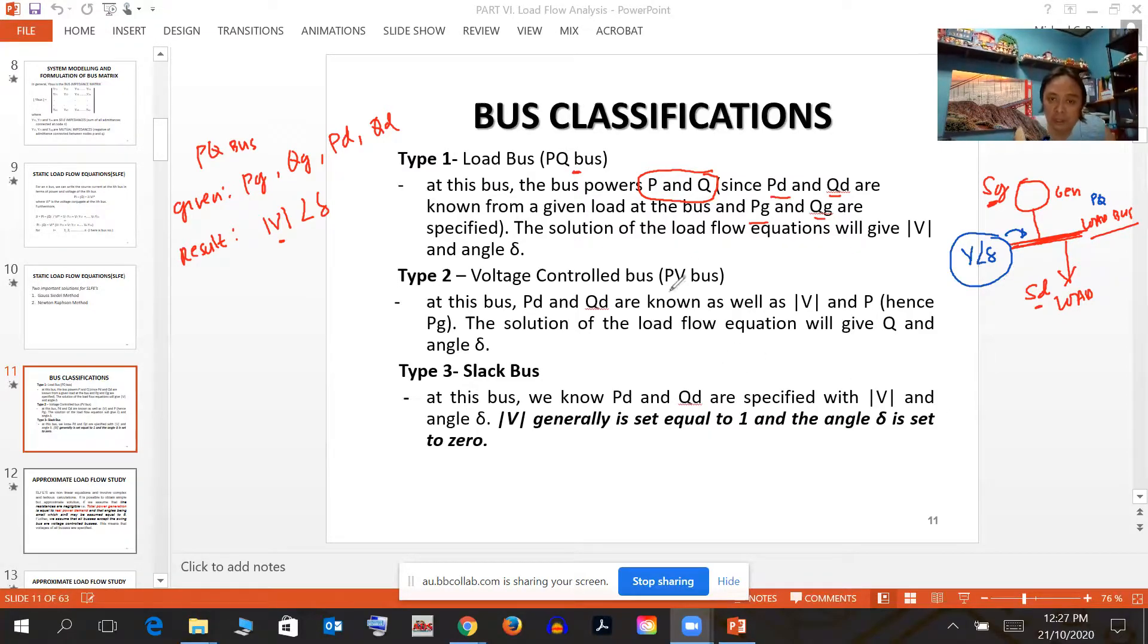This is called a voltage control or PV bus. The setup is: you have a bus bar with generation, and the voltage at the bus bar is limited, say 1.05 per unit. It cannot exceed or go below that voltage limit.